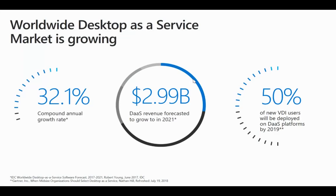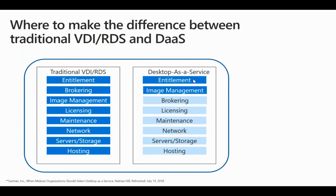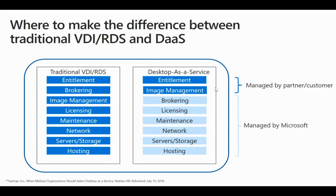Work is no longer a place — it could be the office, home, cafeteria, or airport. The Desktop-as-a-Service market was growing tremendously even before 2020, and COVID caused an immense increase in demand. WVD is the latest version of RDS. In traditional RDS, you managed everything — entitlement, brokering, licensing, maintenance — on-premises. With WVD, everything is managed by the vendor (Microsoft); as a customer or partner, you only manage the user entitlement and the image.